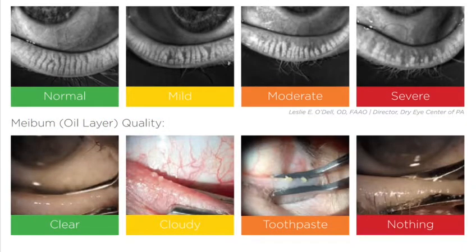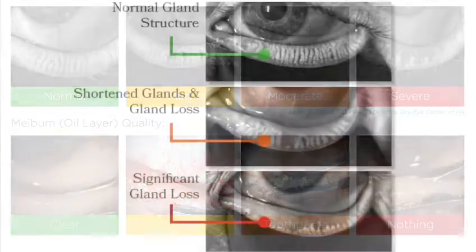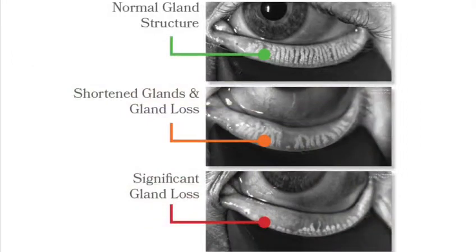Inflammation and obstruction of the meibomian oil glands lead to damage of the glands and cause them to shorten and eventually die off, resulting in a worsening of your dry eye signs and symptoms.